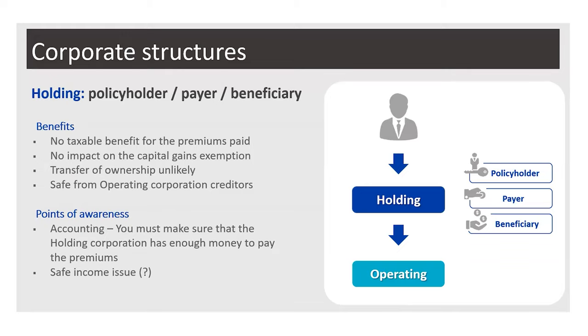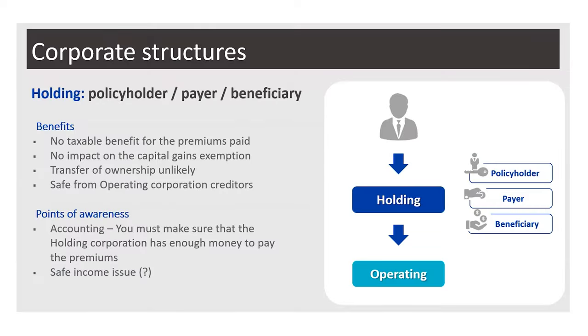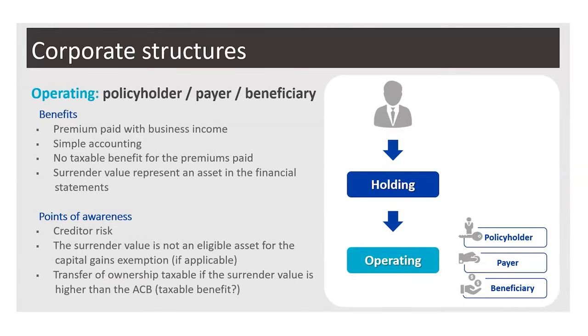Some points of awareness for this structure: on accounting, you must make sure the holding has enough money to pay the premiums, since accountants typically focus on the operating corporation. Also, the safe income issue — safe income is a notional tax account, and if you don't have enough safe income it can be difficult to transfer money from the operating corporation to the holding. Premiums may not be an issue, but if you want to make large deposits in the policy, transferring a large amount from operating to holding may raise safe income concerns. The accountant and tax specialist will help, but keep this in mind.